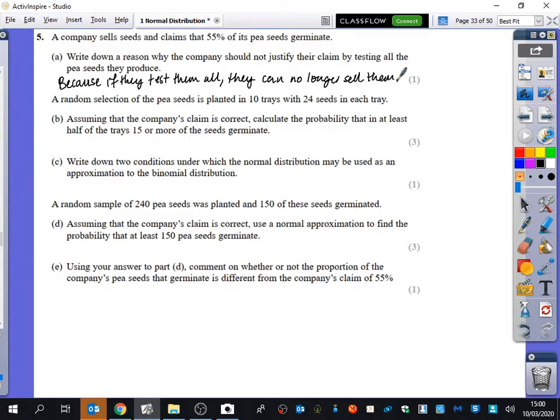So it then says a random selection, random selections, so you might start thinking of different kinds of distributions, of the pea seeds is planted in 10 trays and 24 seeds in each tray. Assuming that the company's claim is correct, calculate the probability that in at least half of the trays, 15 or more of the seeds germinate. Now, this is pretty demanding for just three marks here.